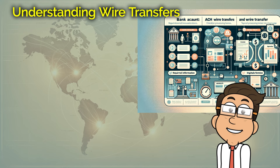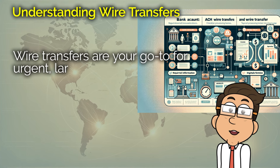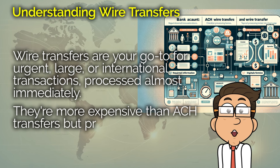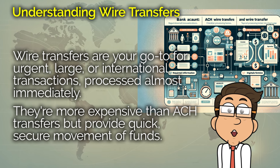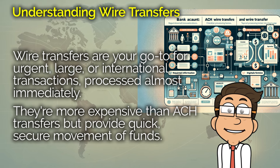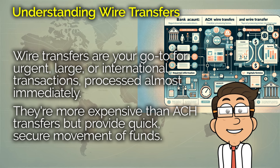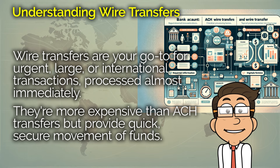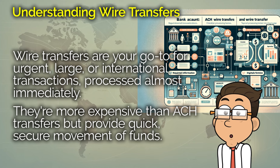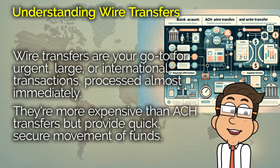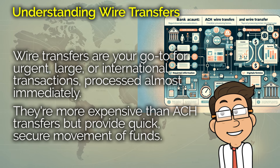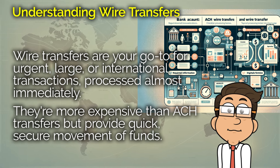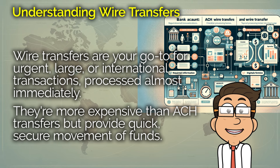Let's talk about wire transfers. These are a bit different. When you need to send money quickly and securely, especially across international borders, a wire transfer is often the way to go. Unlike ACH transfers, which are processed in batches, wire transfers are sent from one bank to another almost immediately. This speed and the ability to send funds globally make wire transfers a preferred method for urgent transactions. However, they come with a higher price tag compared to ACH transfers, and sometimes the fees can be pretty steep depending on where you're sending money.